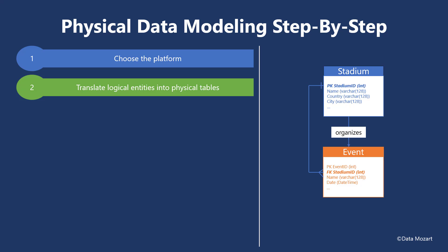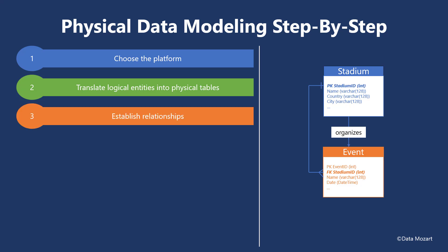Additionally, each physical table should rely on keys to ensure data integrity. It's your task during the physical data modeling process to set primary, foreign, and unique keys. Based on the key columns, the next step in the physical data modeling workflow is to create relationships between the tables.